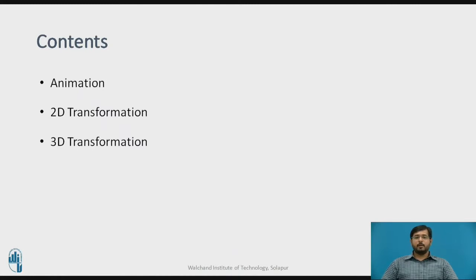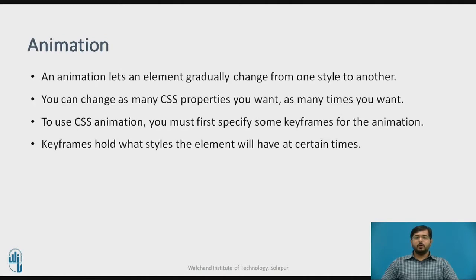The content that we will be covering is animations, 2D transformation and 3D transformation through this video. First is animation and animation lets an element gradually change from one style to another. You can change as many CSS properties you want, as many times you want. To use CSS animations, you must first specify some keyframes for the animations. Keyframes hold what style the element will have at certain times.